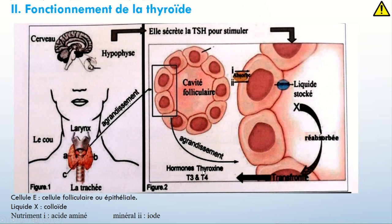Le reste de la fabrication, c'est presque 20% de la fabrication, est consacrée à la T3. En fait, la T4, lorsqu'elle se fixe sur les organes cibles, elle pourra être transformée au niveau de ces organes en T3 qui est plus active. Ceci est dit à titre de culture, mais ce n'est pas à retenir.